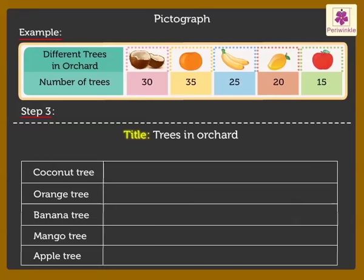Step 3: Write the scale or key. It tells us what each tree picture is equal to. As here, all the number of trees are in multiples of 5, we take the scale as 5.